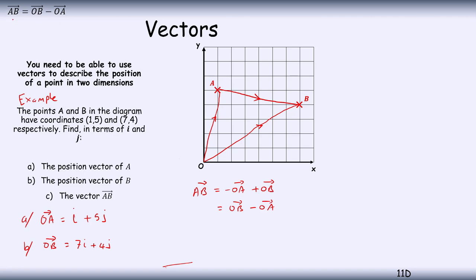Now I know what OB is: OB is 7i plus 4j. And I also know what OA is. I'm going to put brackets around it because that's negative, so minus (i plus 5j). If I collect my i's, I got 7i minus i, so 6i. And I collect my j's, I got 4j minus 5j, so 4 minus 5 is minus 1.